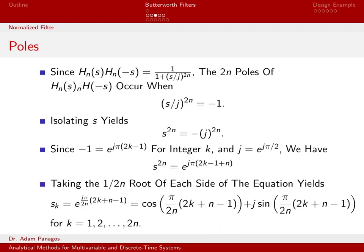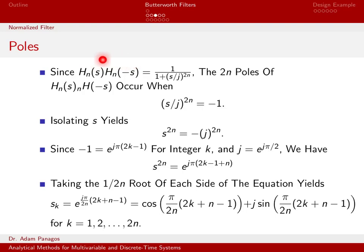Let's analyze the quantity H_n(s) · H_n(-s), which can be written as 1 over (1 + (s/j)^{2n}). This quantity has a total of 2n poles — 2n places in the complex plane where it goes to infinity. A pole occurs when the denominator equals 0, which happens when (s/j)^{2n} equals -1, making the denominator 1 + (-1) = 0, causing the expression to blow up. So the poles are located based on the equation (s/j)^{2n} = -1.